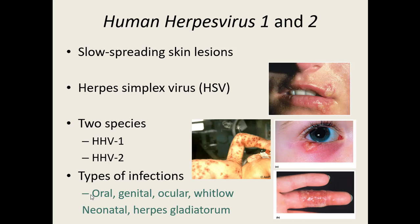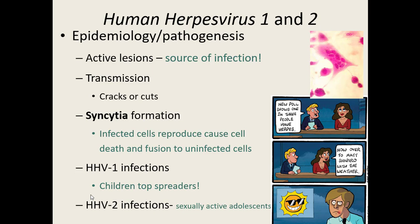The active lesion — the sores — is the source of infection, where you have a large quantity of viruses that can spread from one individual to another. The virus just needs to get into some type of crack or cut in the skin, or through mucous membranes. Once it gets into the body, it gets inside cells and reproduces inside our cells, infects neighboring cells, and will actually cause the original cell plus all the neighboring cells to fuse together into one large structure called a syncytia.